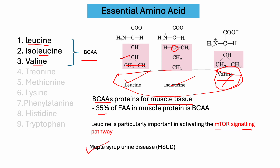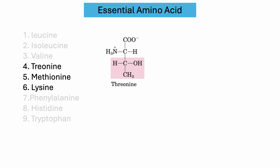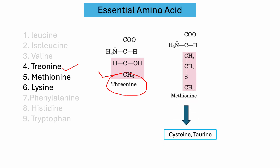Another essential amino acid is threonine. Threonine is very important for the absorption of calcium and also helps with collagen production. The name threonine comes from the four-carbon monosaccharide threonic acid.